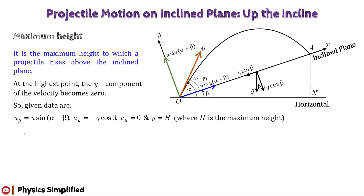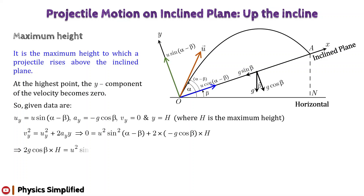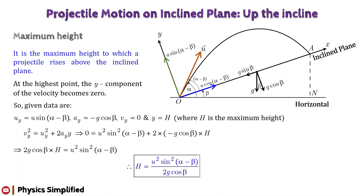From the third kinematic equation, we write: v_y² = u_y² + 2 a_y · y. Substituting the given data and simplifying, we get: 2 g cos β · H = u² sin²(α−β). So the maximum height attained by the projectile fired up the incline from its bottom is given by: H = u² sin²(α−β) / (2g cos β).